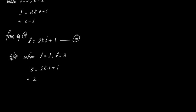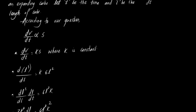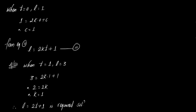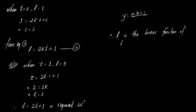Using the second condition, L = 3 when t = 1: 3 = 2k(1) + 1, so 3 minus 1 = 2k, giving k = 1. Therefore L = 2t + 1. This is the required solution, showing that the length of the side of the cube is a linear function of time t, of the form y = mx + c.